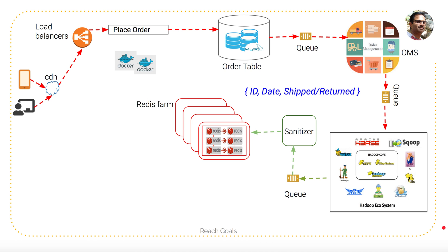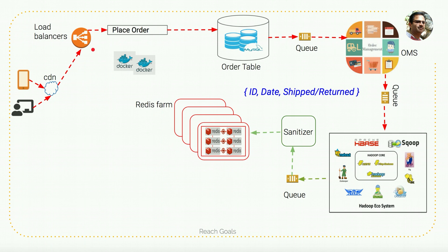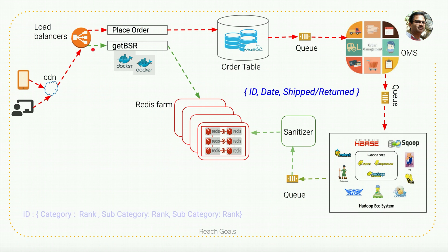For fault tolerance and high availability, I'll have a copy of the same data in a different Redis cluster, so if one cluster goes wrong we can use the other. The data is stored as key-value pairs where the key is the book ID or item ID, and the value contains the category and ranking. We can create another web service — a 'get BSR' service — where we pass the item ID and it connects to the Redis cluster. The stored value will have an ID as the key, along with the category rank, subcategory rank, and ranks under subcategories. Amazon typically gives one primary category and two or more subcategories.